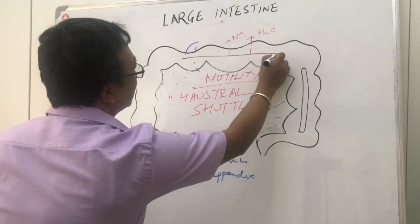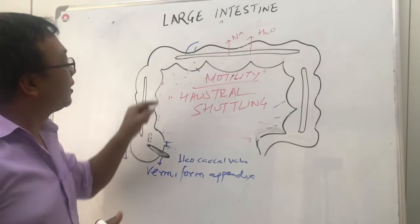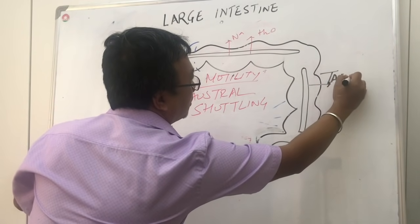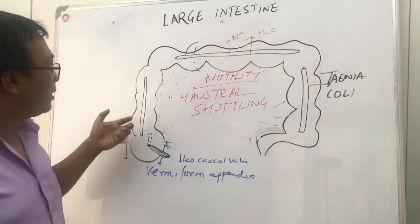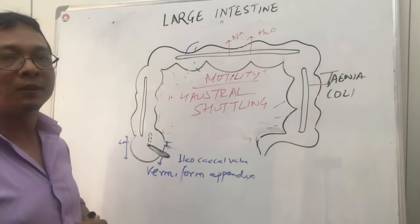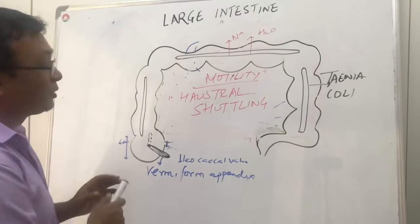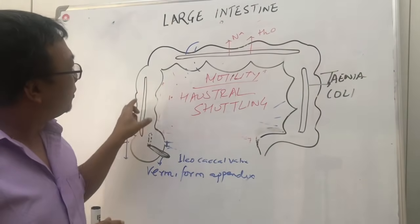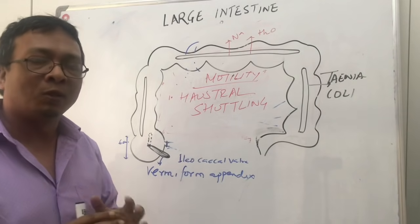The taenia coli is the basic difference between the large intestine and the small intestine. In the large intestine there are no villi like in the small intestine; instead there is a strip of ribbon-like longitudinal muscle called taenia coli. This taenia coli lies below the surface, is visible, and helps in the forward propulsion of food particles. There are three different types of taenia coli, but they all help in the longitudinal propulsion of food material.